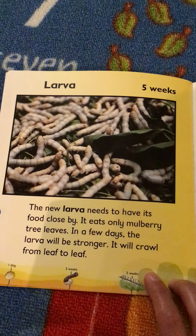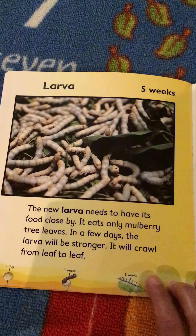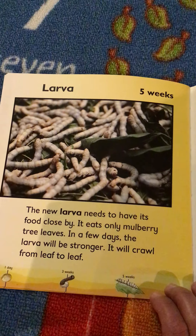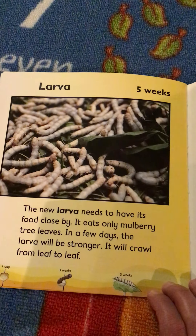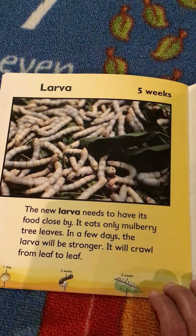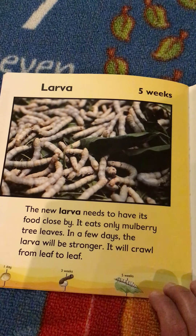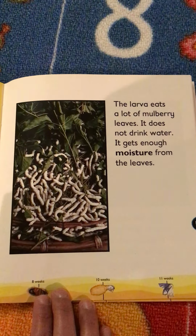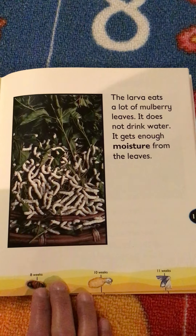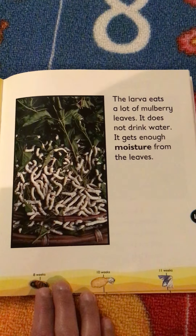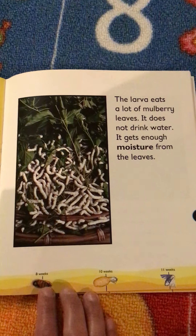The new larva needs to have its food close by. It eats only mulberry tree leaves. In a few days, the larva will be stronger and it will crawl from leaf to leaf. The larva eats a lot of mulberry leaves and does not drink water — it gets enough moisture from the leaves.